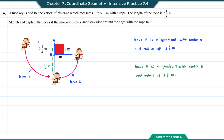As the monkey continues to move anticlockwise, the rope length becomes 1.5 minus 1 equals 0.5 meters. This last part is another quadrant of a circle with center at point C and radius 0.5 meters, called locus R. Locus R is a quadrant with center C and radius of 0.5 meters.